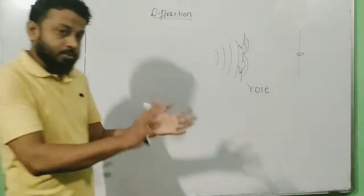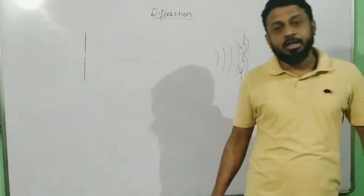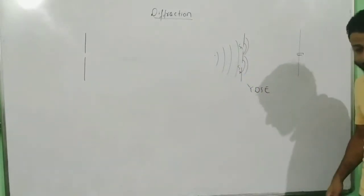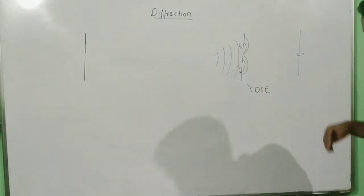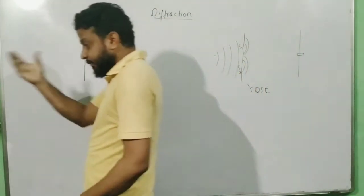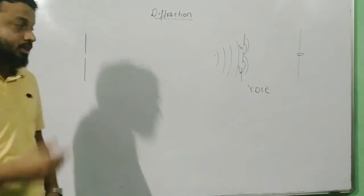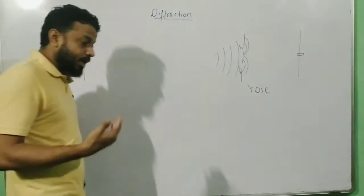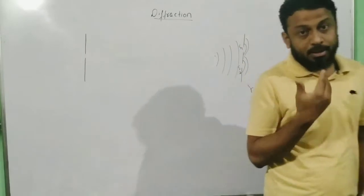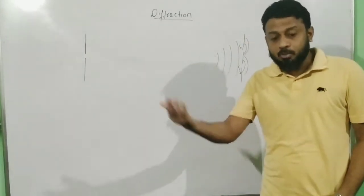There is only one slit which creates the entire diffraction pattern. The diffraction pattern will have bright and dark fringes, but there will be a certain difference. So let's try to understand this. First let's define what exactly diffraction is. When diffraction was found, it was found that it is the bending of light around the sharp corners of obstacles.